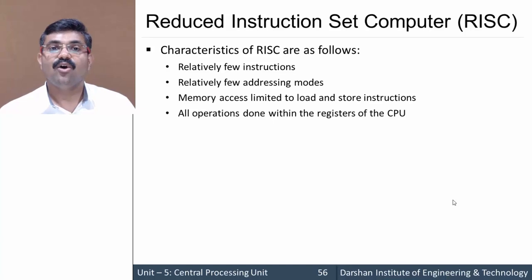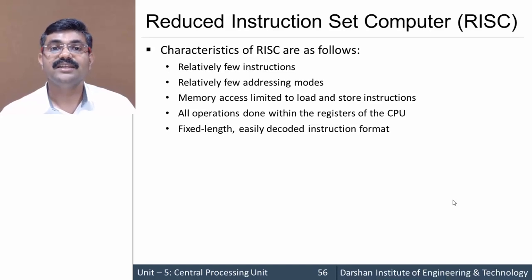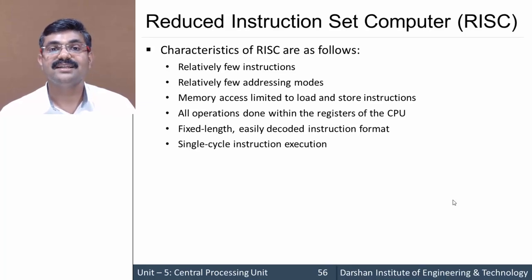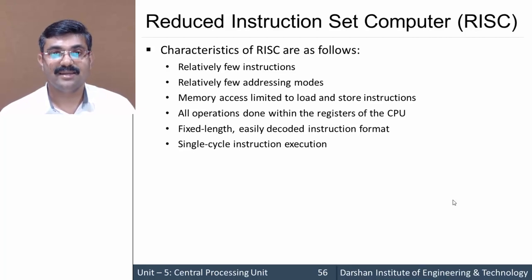All operations are carried out within the CPU registers because there is no direct memory access. Since there are fewer instructions and fewer addressing modes, instructions are of fixed length. They are also single-cycle instructions, meaning RISC instructions execute within one timing cycle, giving the benefit of faster execution compared to CISC.